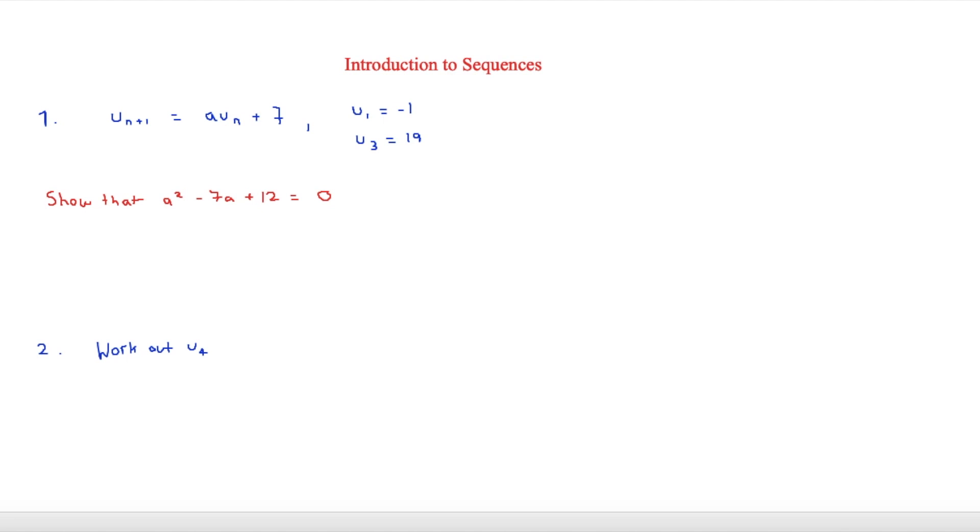But to start, what we're going to do is we're going to work out what u2 is. And we know that u2 is going to be equal to, if we put minus 1 here, we know that the first term is minus 1. So that's going to be minus a plus 7.